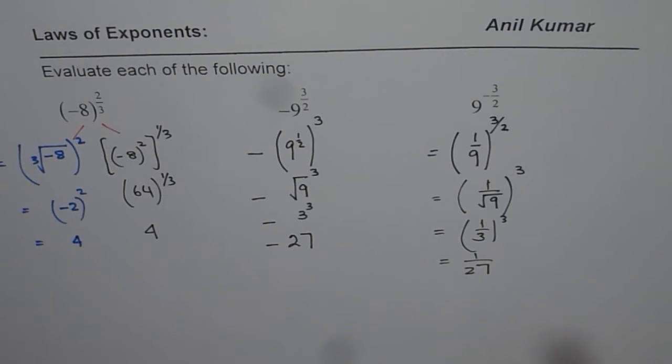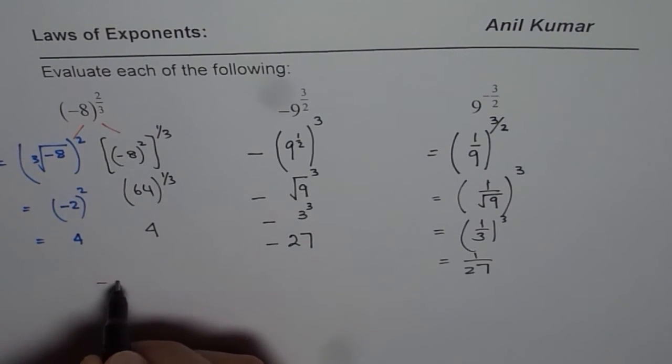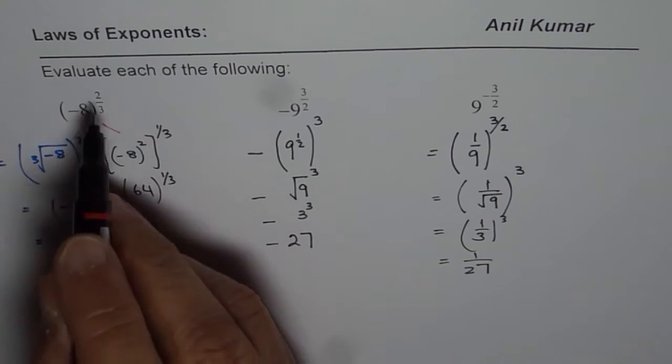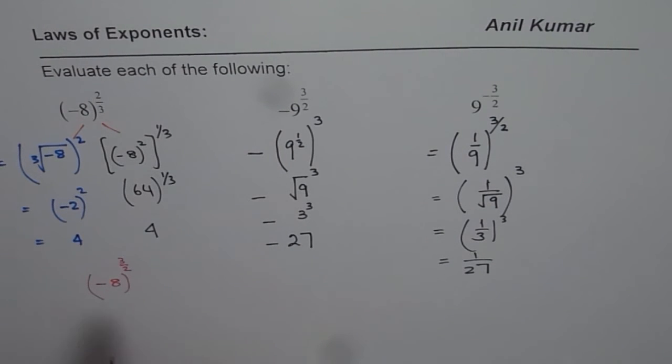Now here are a few cases for which we may not have any solution. For example, if my question is, so these are additional questions. Let's say minus 8 to the power of, instead of 2 over 3, if I write 3 over 2, then what happens? Well, in this case, what we need to do is first we need to, either we could cube it or square root. If we square root minus 8 square root and then cube, we know square root of minus 8 is not valid. Do you see?